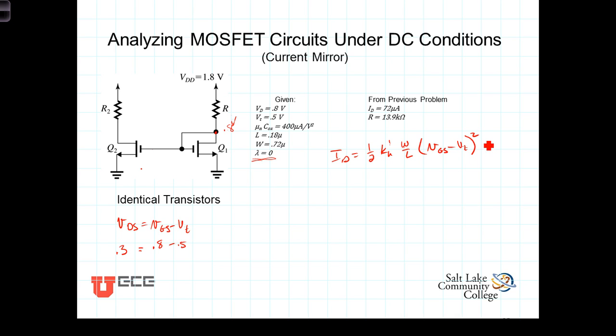And once again neglecting the early effect, we know then that the current I sub D is independent of the drain to source voltage VDS. So, and let's be explicit, I sub D then is only dependent upon VGS and other quantities that are physical parameters of the transistors.